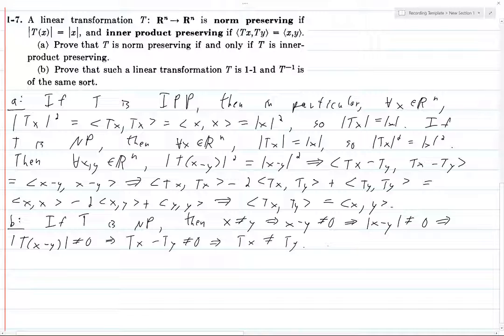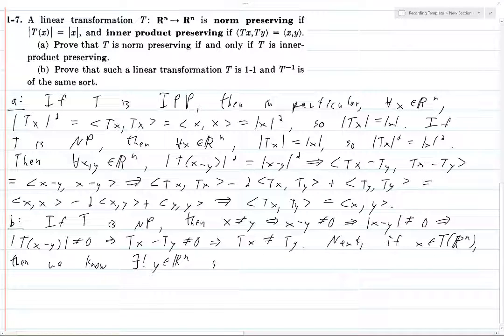So next, if x is in the image of T, the image of R under T, then we know, let's just say there exists a unique y in R^n such that T inverse x is, such that y equals T inverse x. So T inverse x is equal to y. This is just something in R^n. So we use norm preserving this.